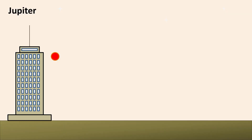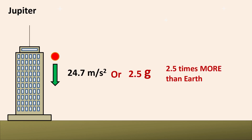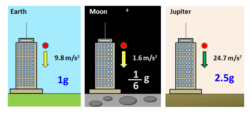Let's take another example. Suppose you drop an object on Jupiter. Then it will accelerate at 24.7 meters per second squared. This means the relative acceleration on Jupiter is 2.5 times more as compared to Earth. Thus relative acceleration compares how fast or slow the object accelerates when compared with Earth's gravitational acceleration.